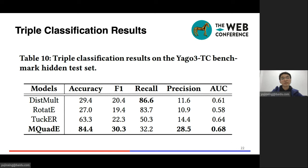For triple classification experiments, we evaluate on Iago3-TC benchmark dataset. The fact triples in Iago3-TC are labeled by humans. The negative samples are much more difficult than the previous random generated negatives for the fact triples. So this dataset is very challenging. From the results, we can see that except for recall, MQuadE outperforms the baseline methods, especially on precision and accuracy. Both metrics are very important for triple classification.